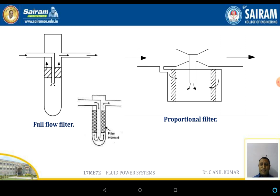The schematic diagram shows full flow filters with two different types. The left side is the inlet and the right side is the outlet. Oil enters from the inlet and once it fills the lower portion of the tube, it is pressurized to pass through the filtering mechanism and is expelled through the outlet. The mesh element used may cover a small portion or the entire major portion of the filter.